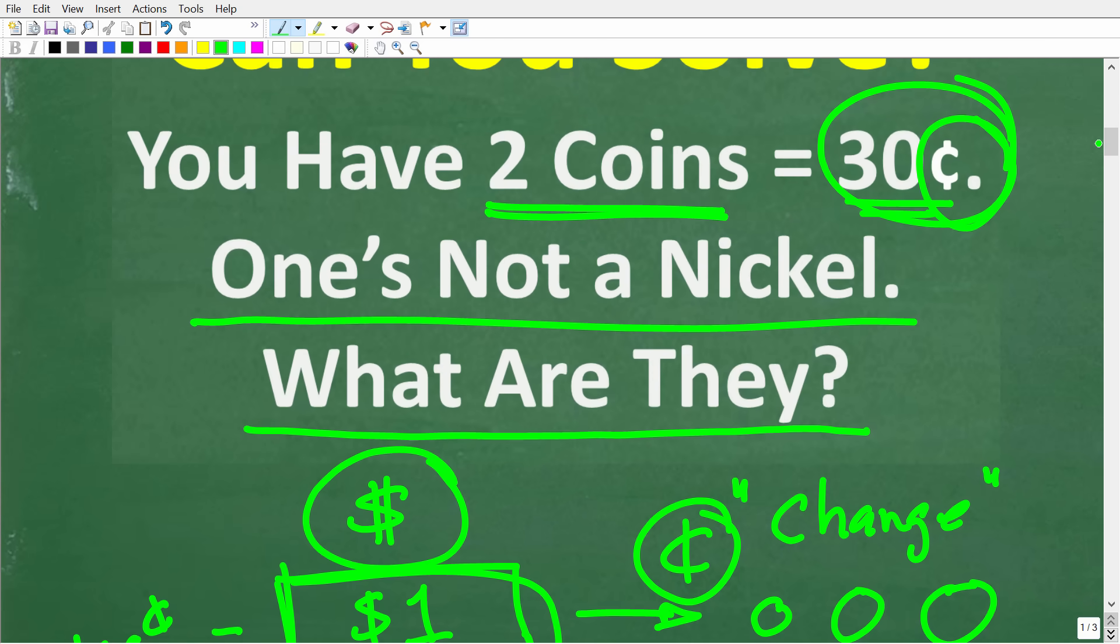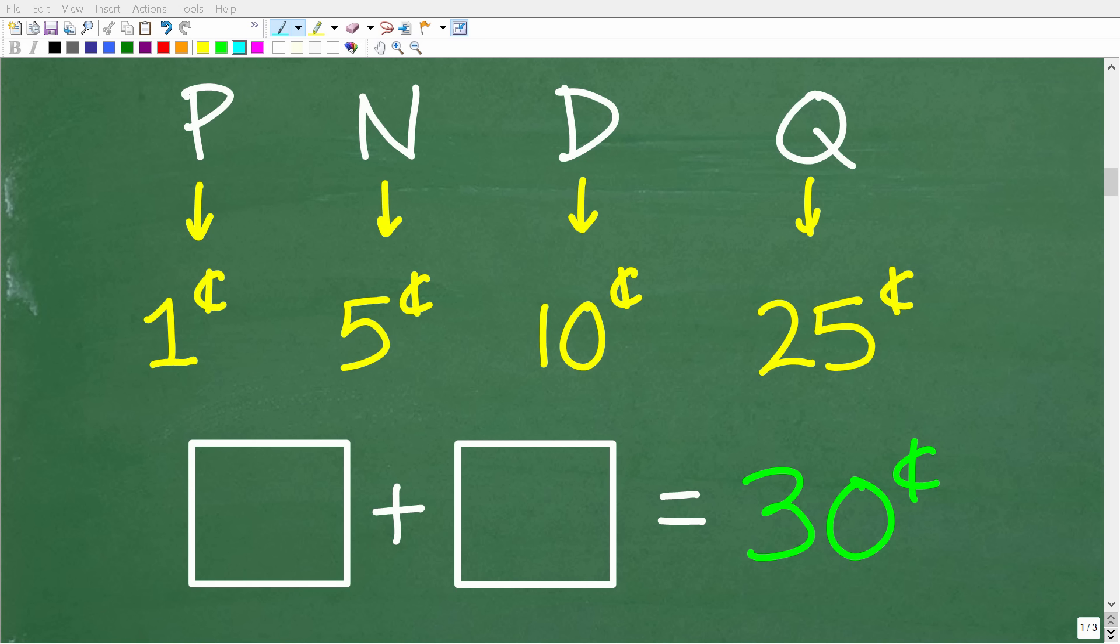And again, going back to this problem, you have two coins, and the value of these two coins is equal to 30 cents. One's not a nickel, what are the coins? So now that we know something about coins and understand the problem, we can apply some basic math to get the answer.